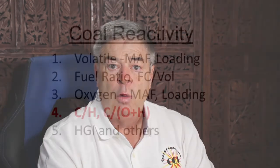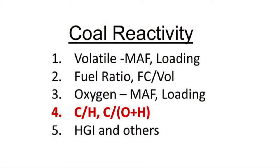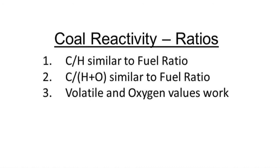There are some papers out there — I remember Bob Hensel's paper on coal combustion — where they use a lot of different ratios: carbon to hydrogen ratios, carbon divided by oxygen plus hydrogen ratios. These ratios, if you think of hydrogen as being in the volatile and carbon in the fixed carbon, tend to follow the fixed carbon divided by volatile ratios. They're not exactly the same and there are some differences, but generally the volatile loading and the oxygen loadings are enough to actually pinpoint differences in reactivity.